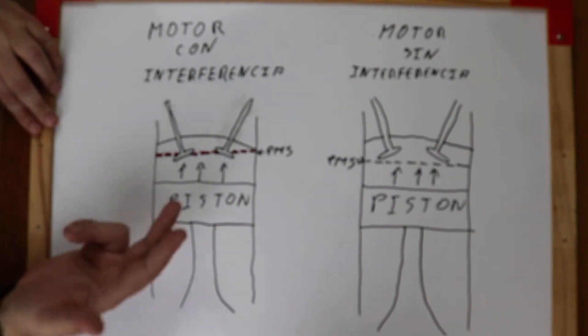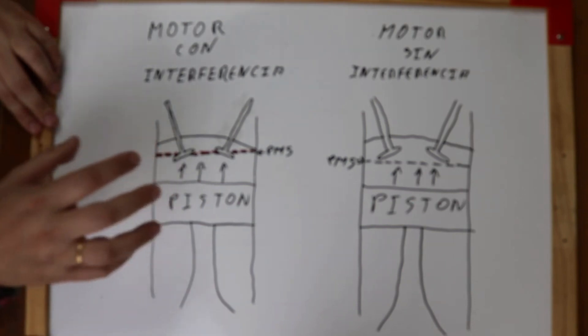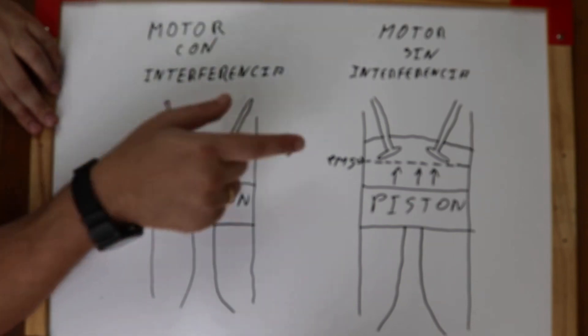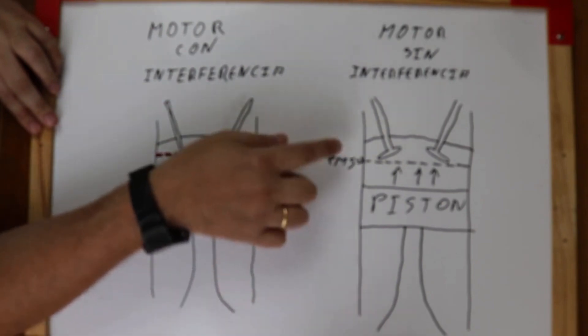In an engine without interference, even if the timing breaks, like the piston at top dead center does not occupy the space of the open valves, here they will not hit each other. So here what should be done basically is to change the distribution.